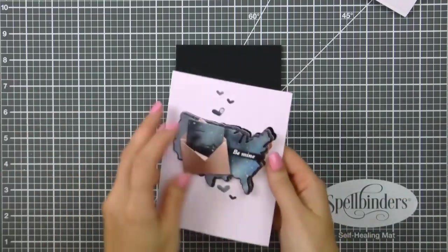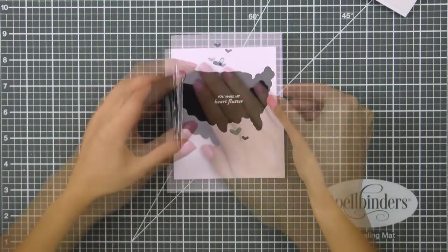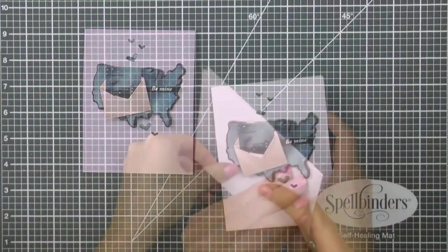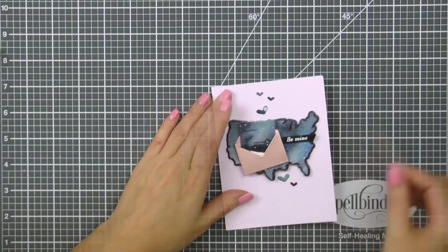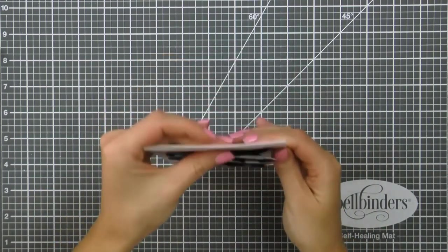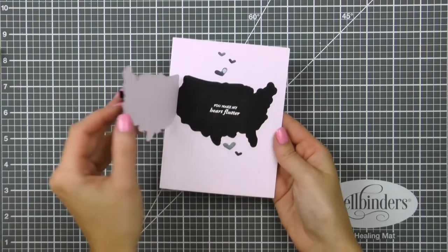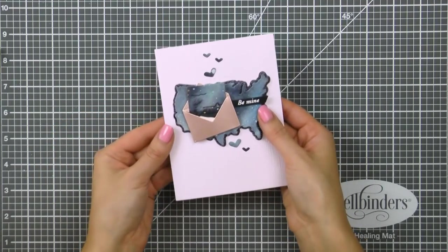And here I heat embossed that secret message on the black cardstock panel. I adhered this panel so that you can see the message when you open the map and then will adhere this piece onto the card base. And here is what this other card idea looks like.